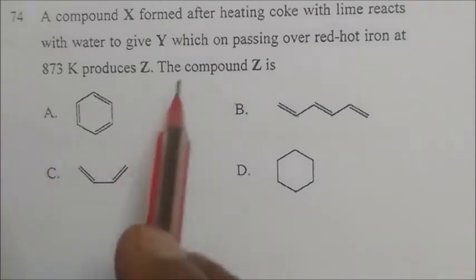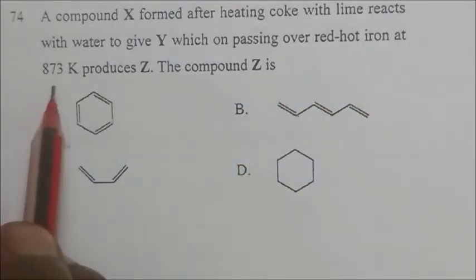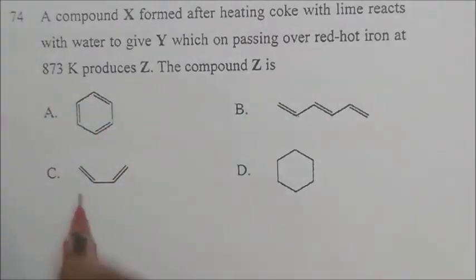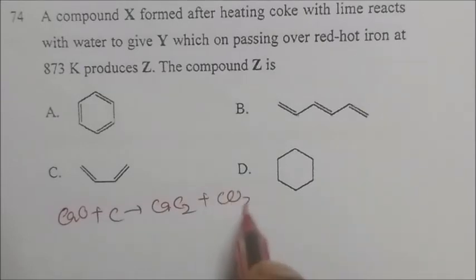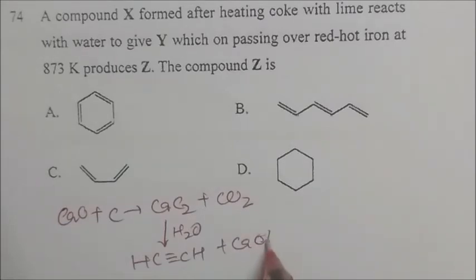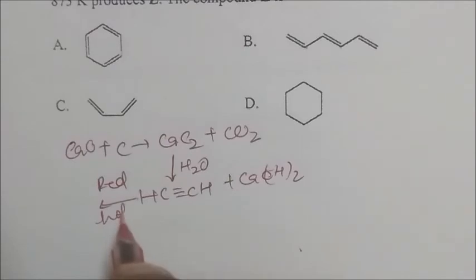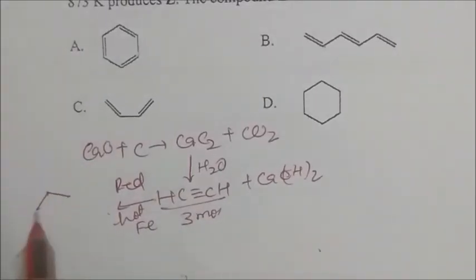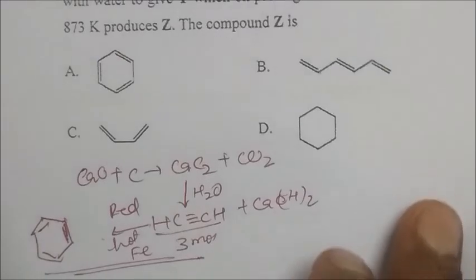Compound X is formed by heating coke with lime: CaO + C → calcium carbide (CaC2) + CO2. Calcium carbide reacts with water to give acetylene (HC≡CH) and calcium hydroxide. Acetylene passed over red-hot iron at 873 K undergoes trimerization to produce benzene. So compound G is benzene. The answer is A.